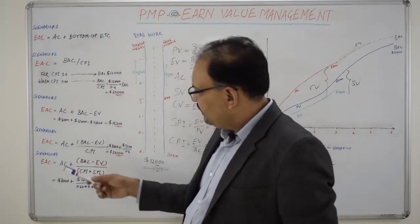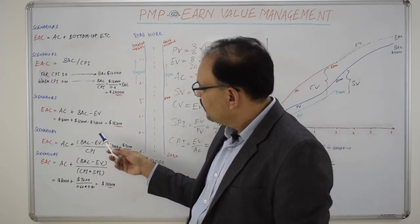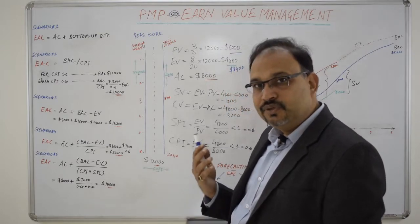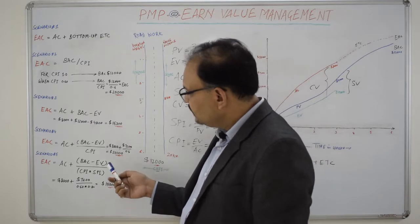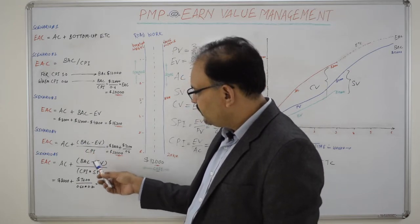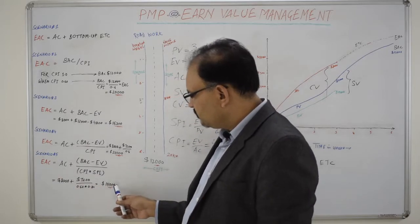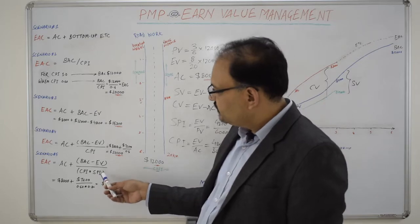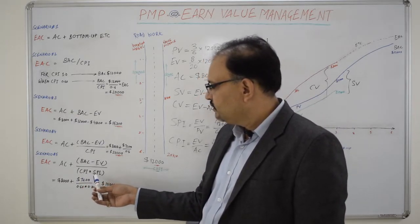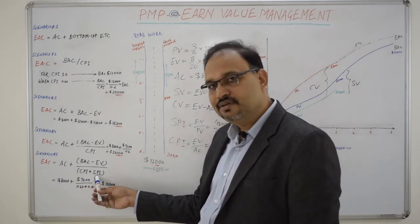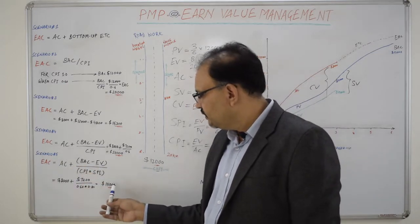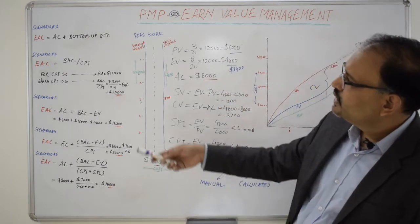Scenario Number Five is a variation of Scenario Number Four, again derived from Scenario Number Three. Here the project wants to consider the impact of schedule alongside the CPI. In that case, the SPI is multiplied to the CPI, and the remaining work component is divided by both of them. The value for EAC comes out to be $15,000. There is also a variation available in this formula wherein the project manager provides some weightages to CPI and SPI — say CPI at 80% and SPI at 20%, or the other way around, or 50-50% — and in that case EAC will yield a different value.